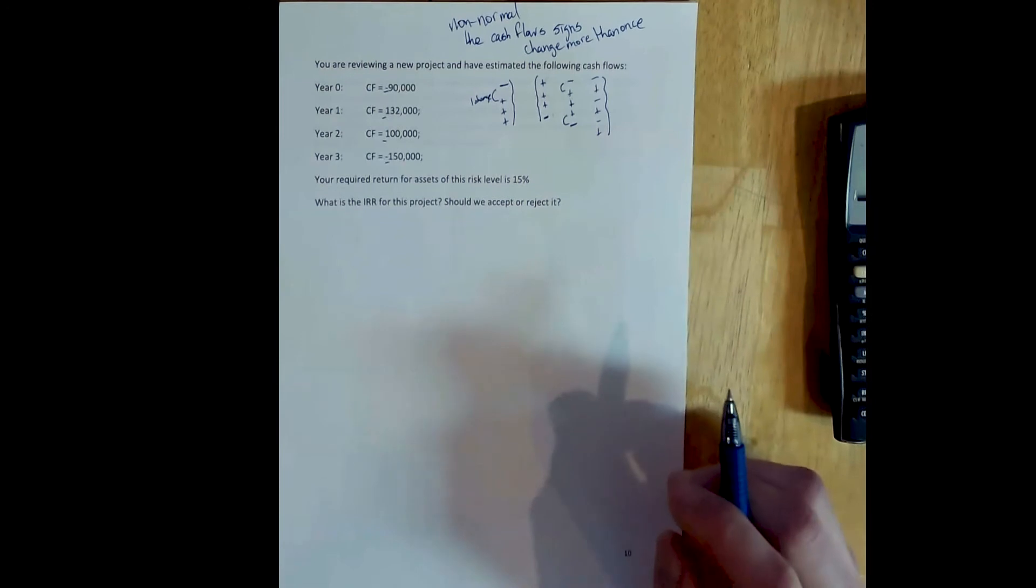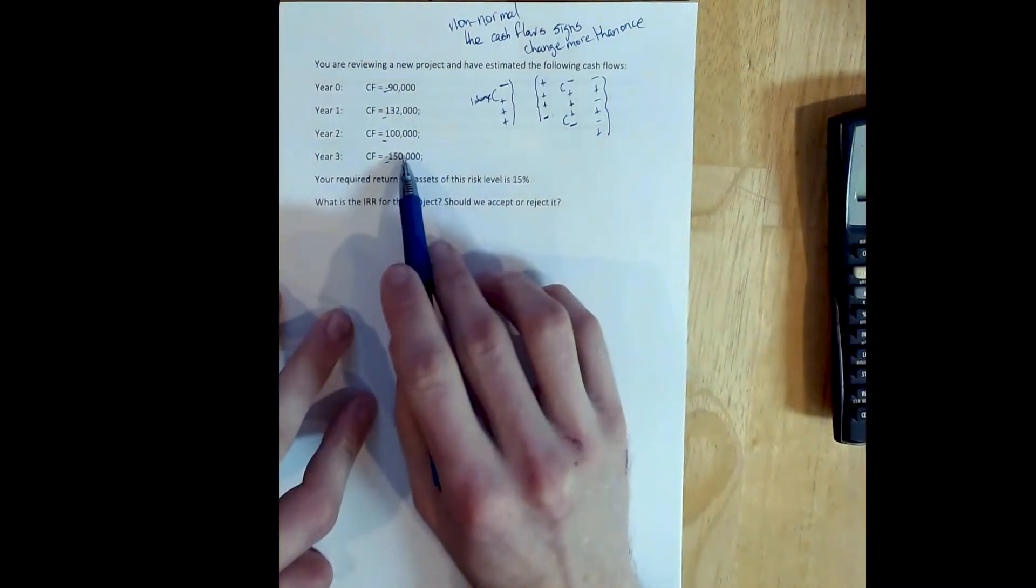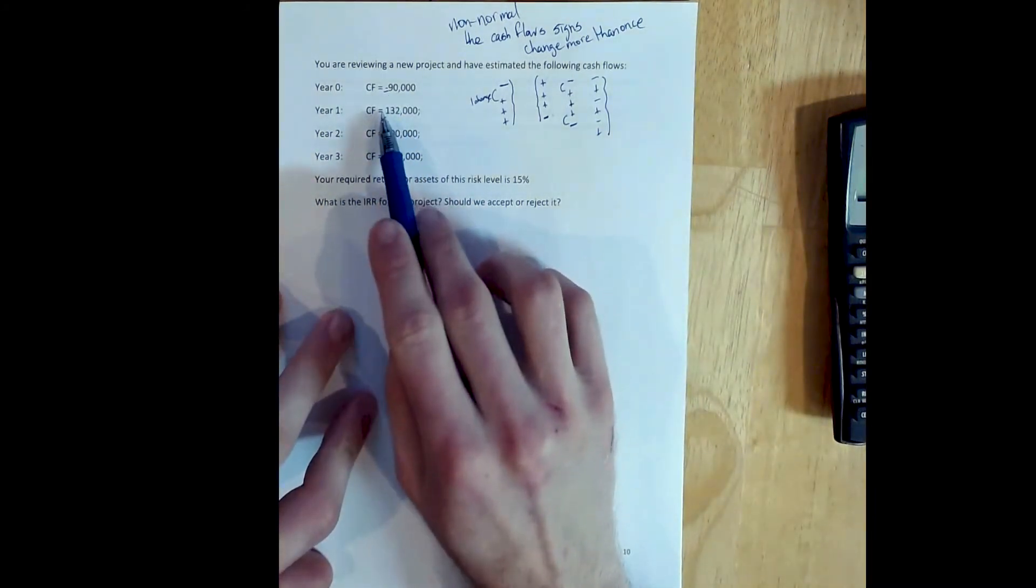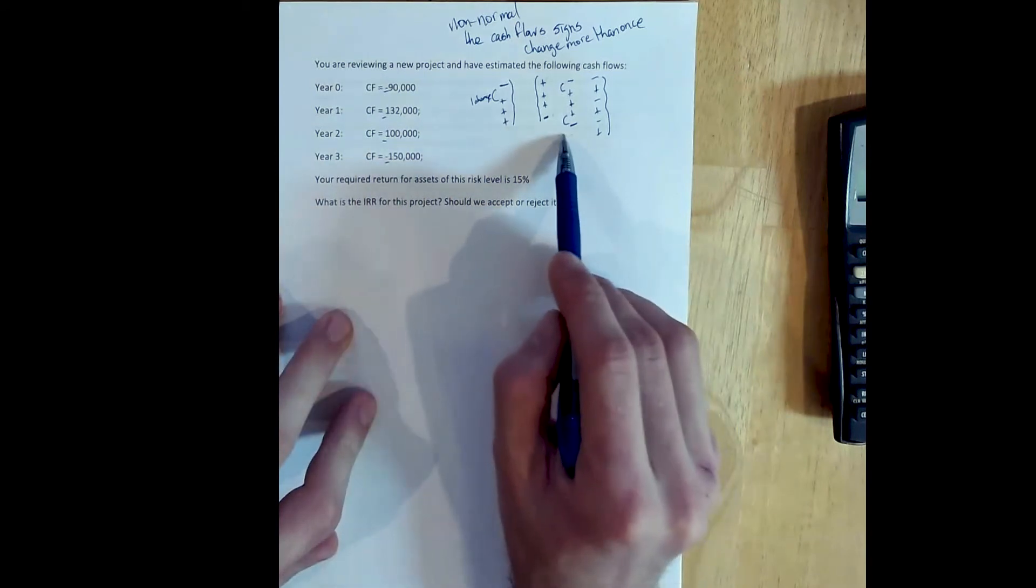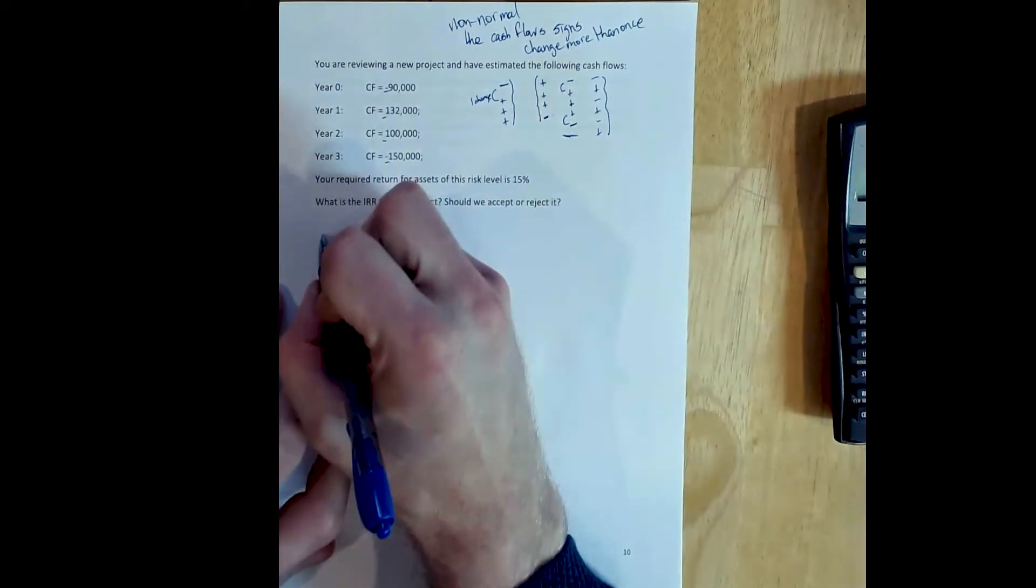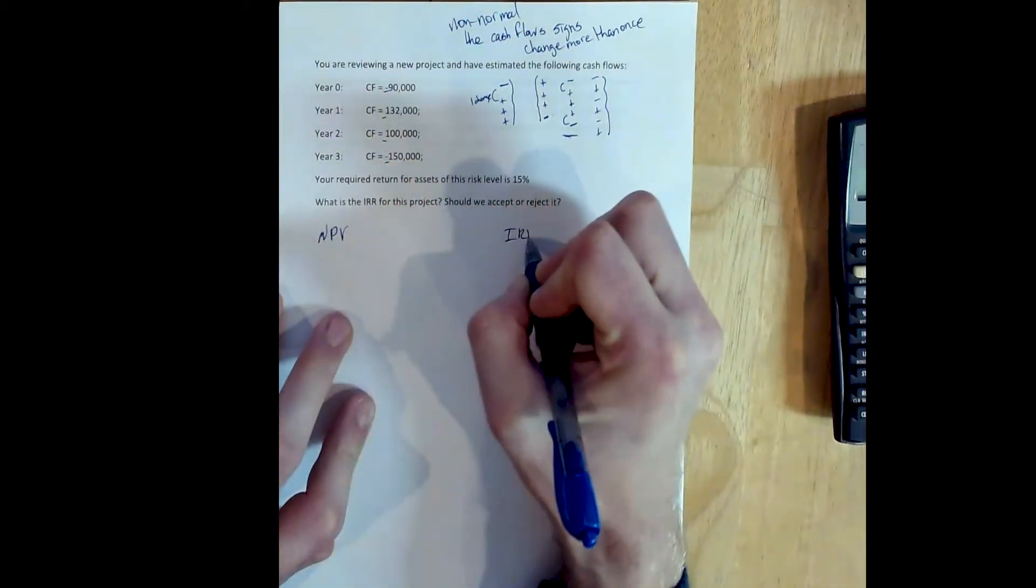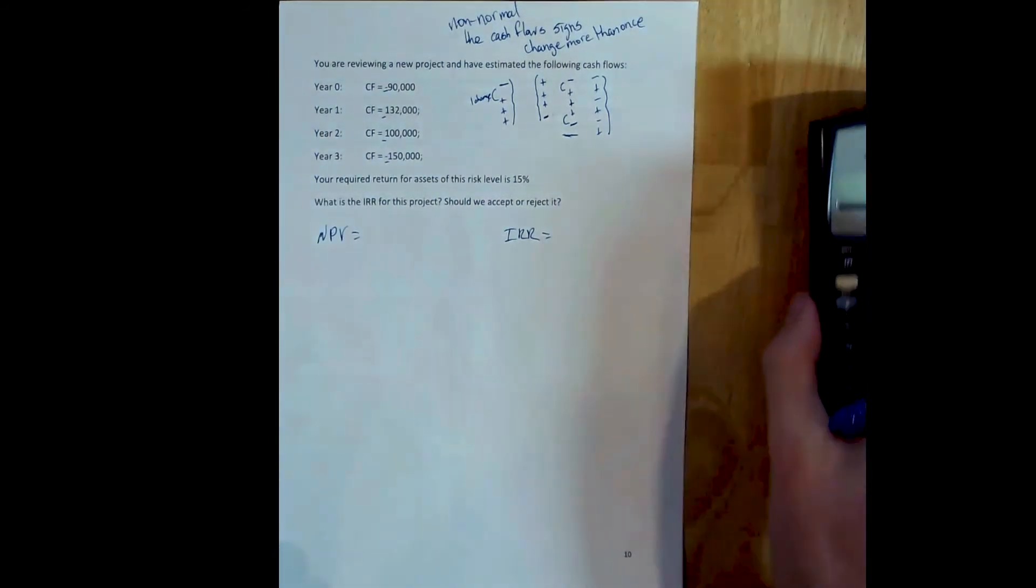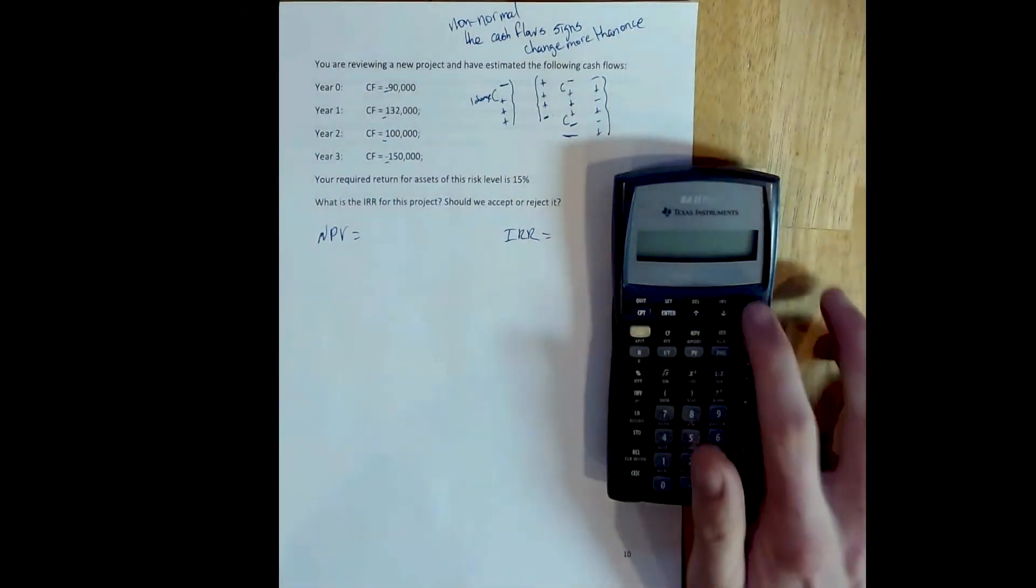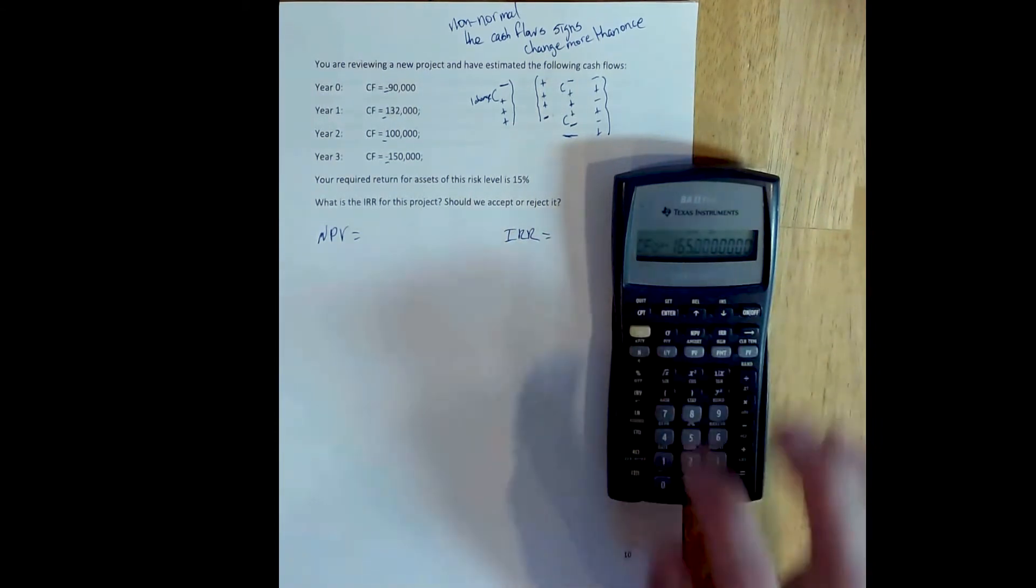Now IRR fails in the case of non-negative cash flows, and I want to show you why. So here we have our non-normal cash flows. We have the cash flow signs change more than once. We have this case. And let's solve for net present value and solve for internal rate of return on this project. So we'll just use the calculator here. And because we can do these together, this will be quite quick.